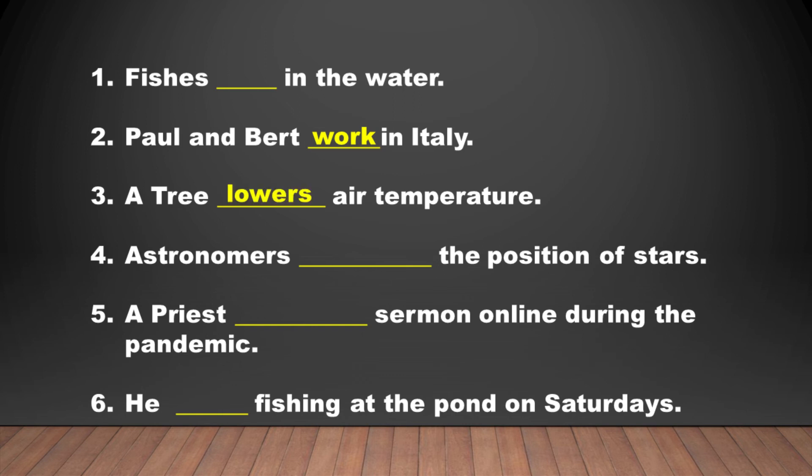Next. The verb is lower. It goes with: trees lower air temperature. This verb, live, goes with: fishes live in the water. Another verb: preaches goes with what sentence? Yes, a priest preaches sermon online during the pandemic. Goes also is appropriate with this sentence. Yeah, he goes fishing at the pond on Saturdays. And finally, the verb describe is with the last sentence: astronomers describe the position of stars.